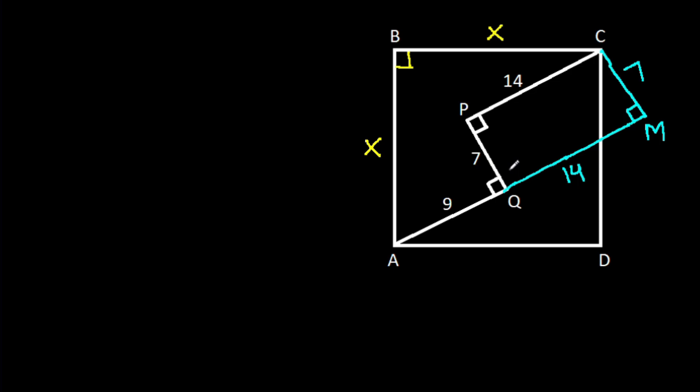Now, if we join AC, then AC squared will be AM squared plus CM squared, and also AC squared will be AB squared plus BC squared.